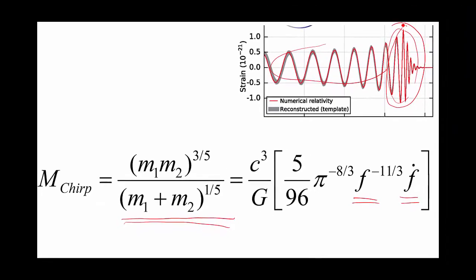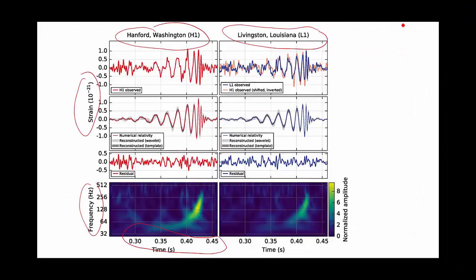Now to get more information we can do a full fit to the entire curve. That's what this red line is here compared to gray which is a smooth version of the data. And from that you learn that one of the objects must be about 36 solar masses, the other one about 29 solar masses. They can't be spinning too fast. They have to be black holes.